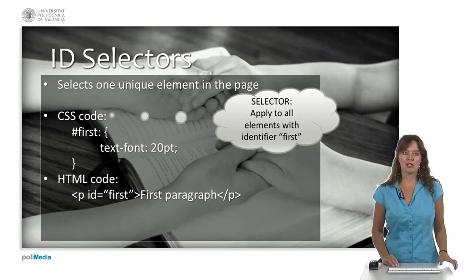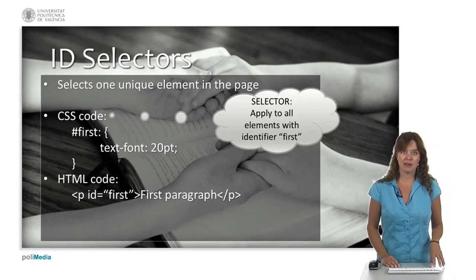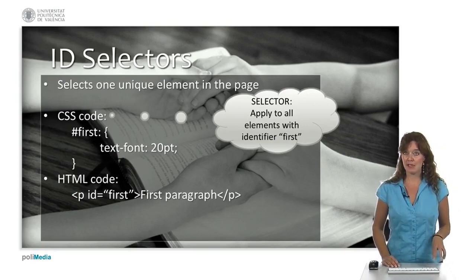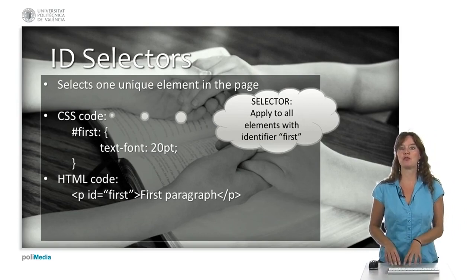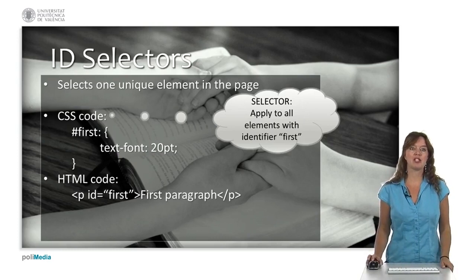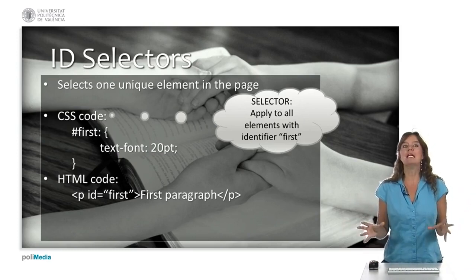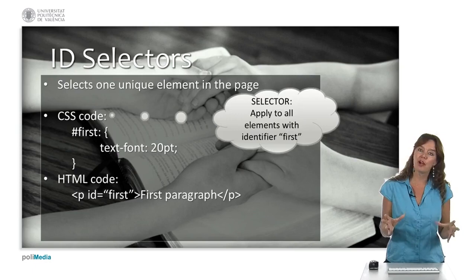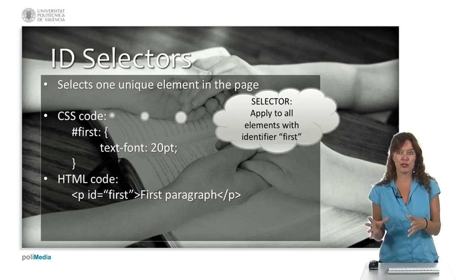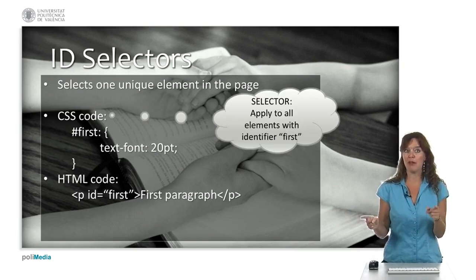The selector is 'first' and it means every element that has the identification 'first' will have a text font of 20pt. In HTML, when we create an element, we say the identifier of this element is 'first', and then the CSS code makes sure that specific text will have a font size of 20 points.